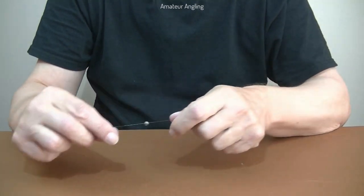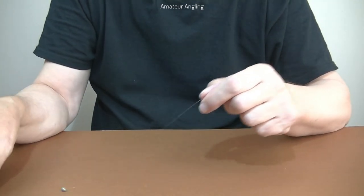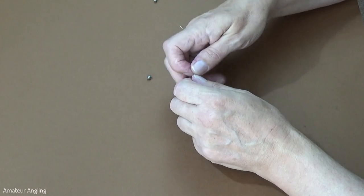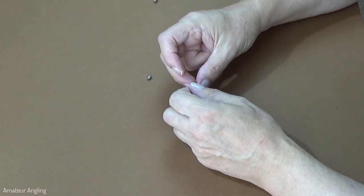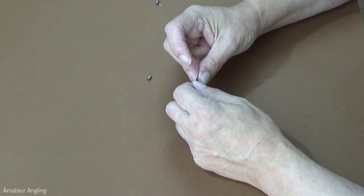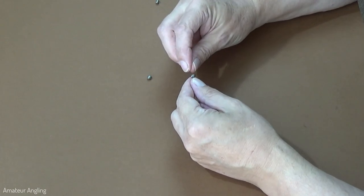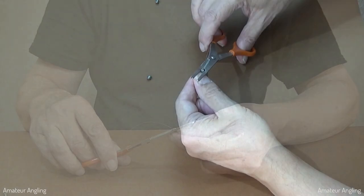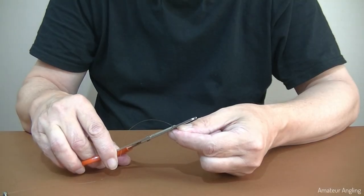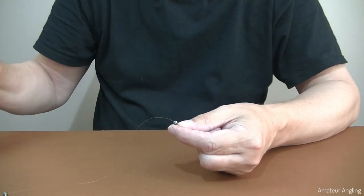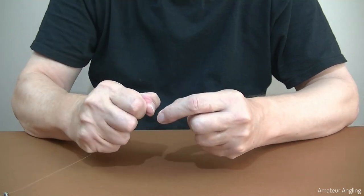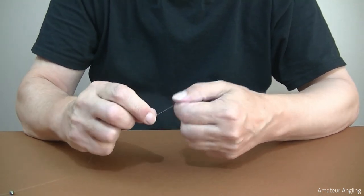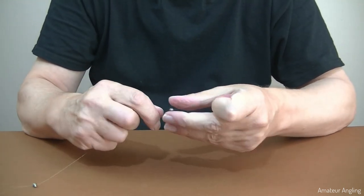The solution is to close the shot tightly and completely down on the line with pincers or pliers, then forcibly slide the shot back and forth over the flattened section. As the shot bumps between the flat spot and the full thickness line, it opens slightly and the inside of the split becomes burnished.